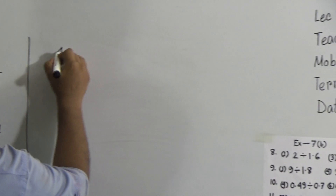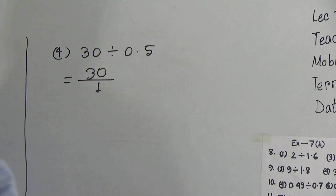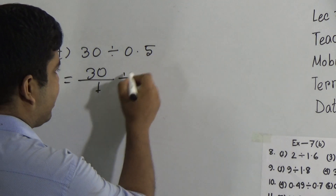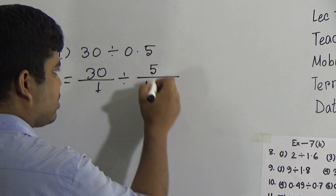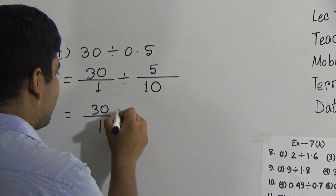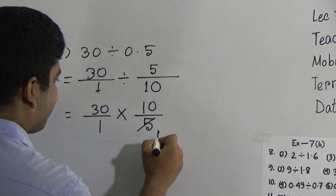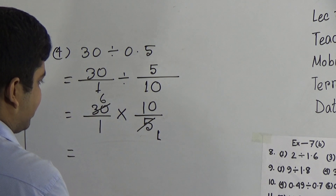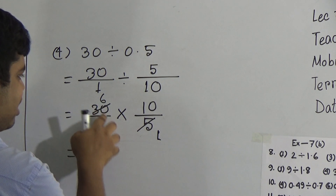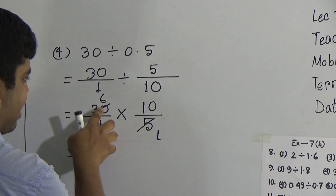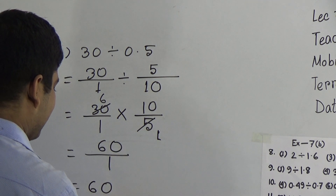Next we solve sub-question 4: 30 divided by 0.5. We write 30/1 divided by 5/10 (since after the point there is 1 digit, so 10). So 30/1 multiplied by 10/5. We cut 5 and 30: 5 ones are 5 and 5 sixes are 30. As numerator: 6 × 10 = 60, denominator: 1 × 1 = 1. So 60 is the required answer.